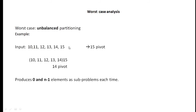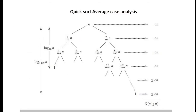Let's understand the average case with an example where we have n elements divided in the ratio of 1:9. The left subtree has ratio 1 and the right subtree has ratio 9, so the left will have fewer elements. These two sub-problems are further divided: the 1/10 part splits into n/100 and 9n/100, and the 9/10 part also splits into 9n/100 and 81n/100 respectively, and so on for all levels of the tree.